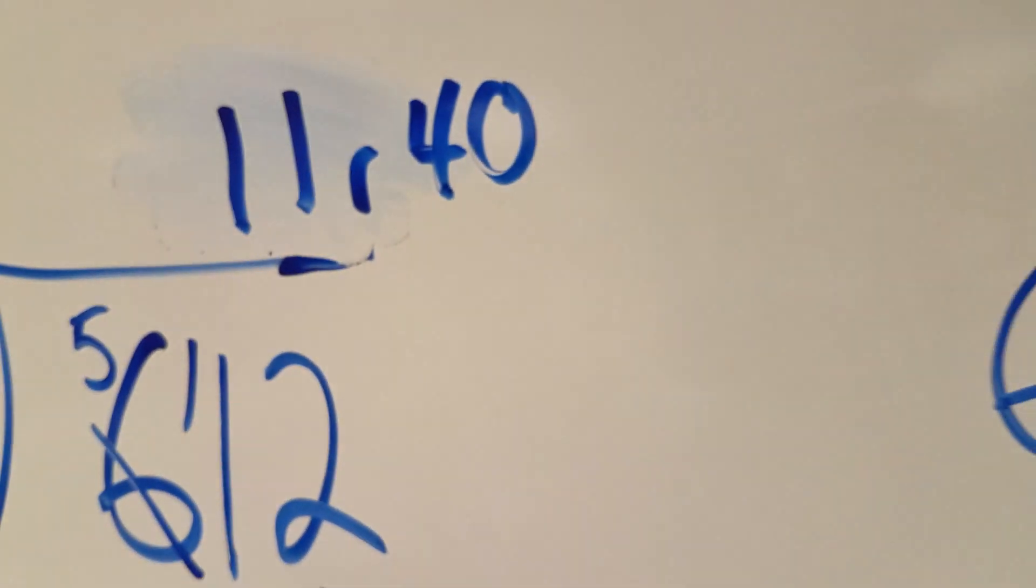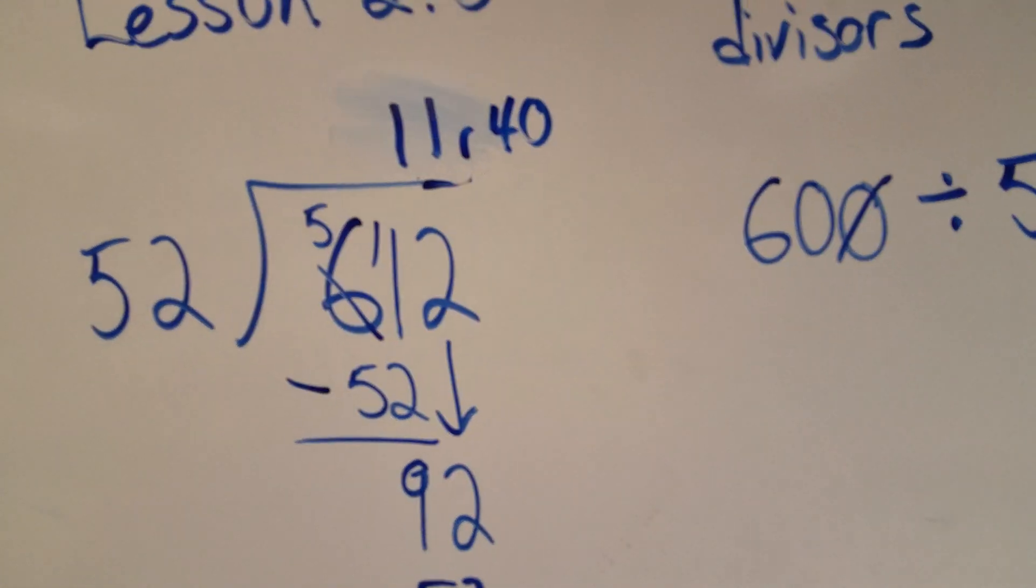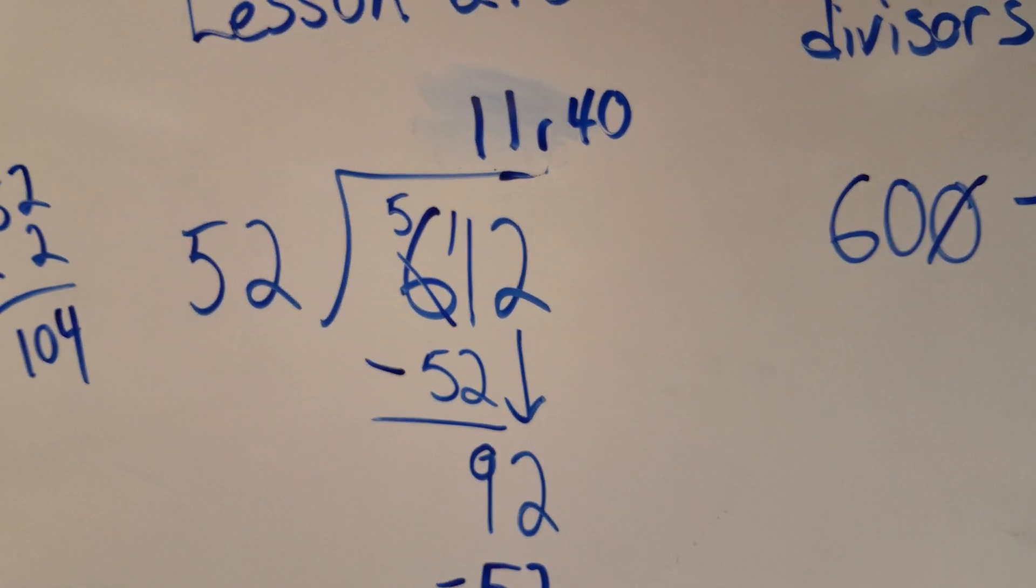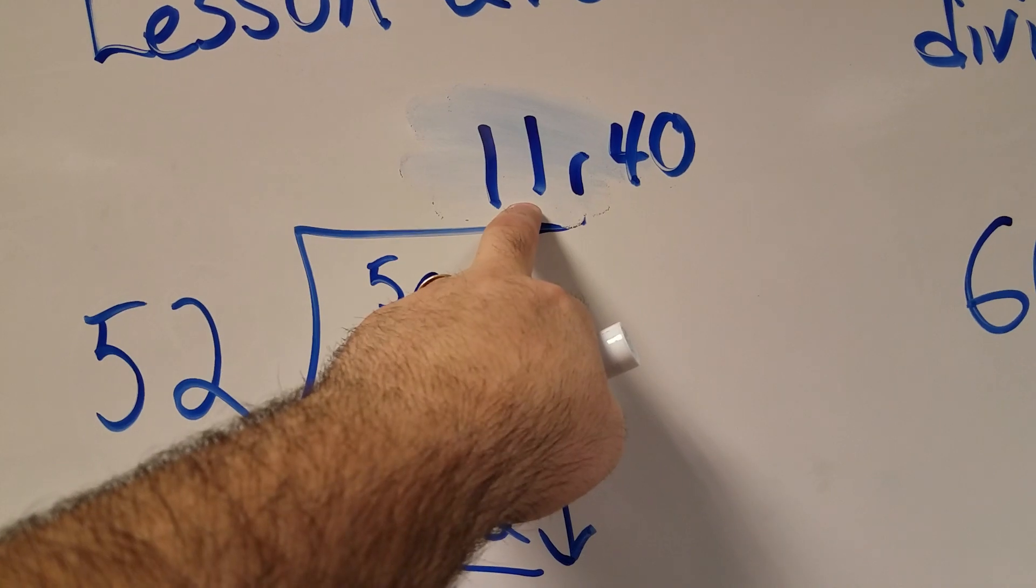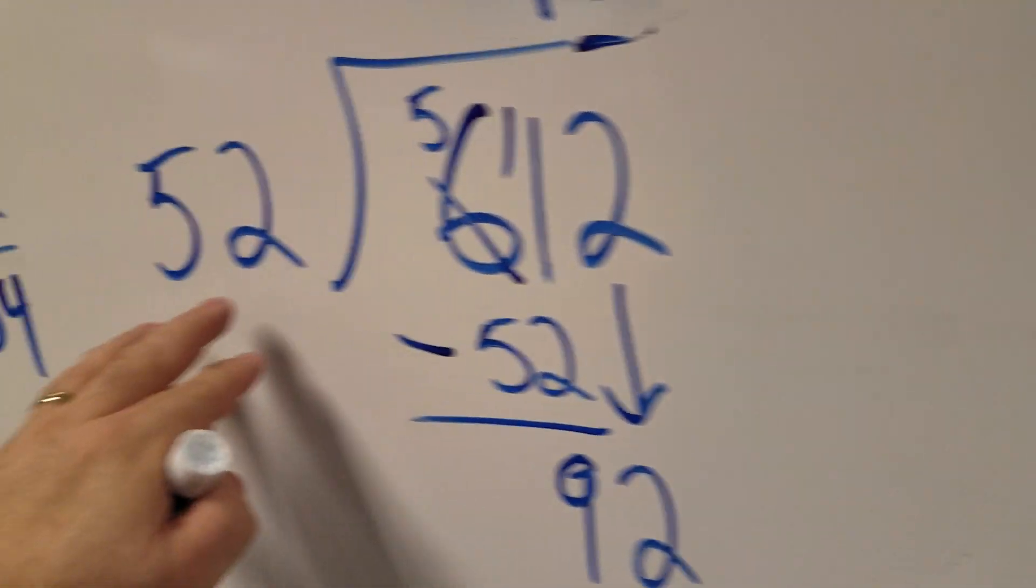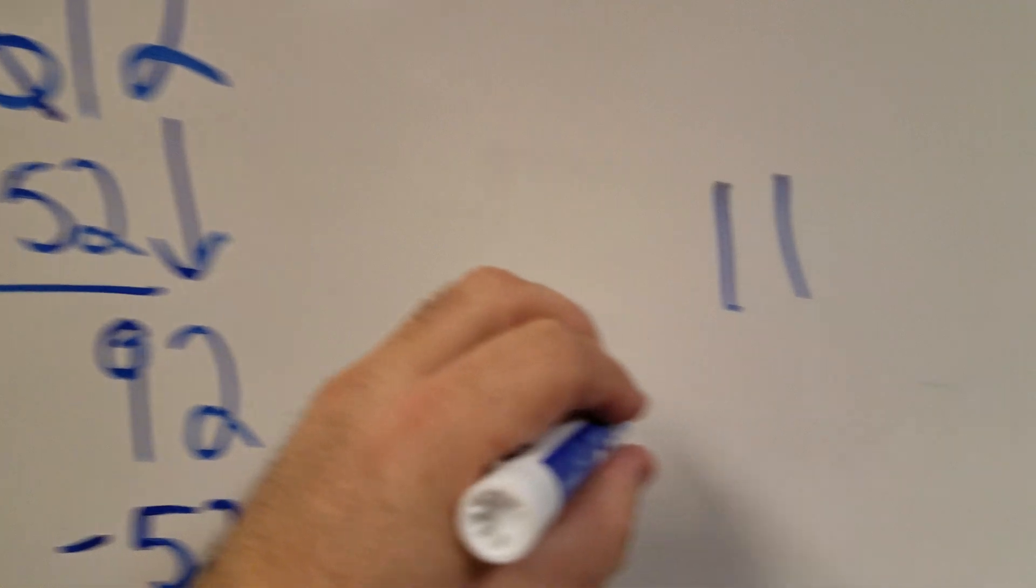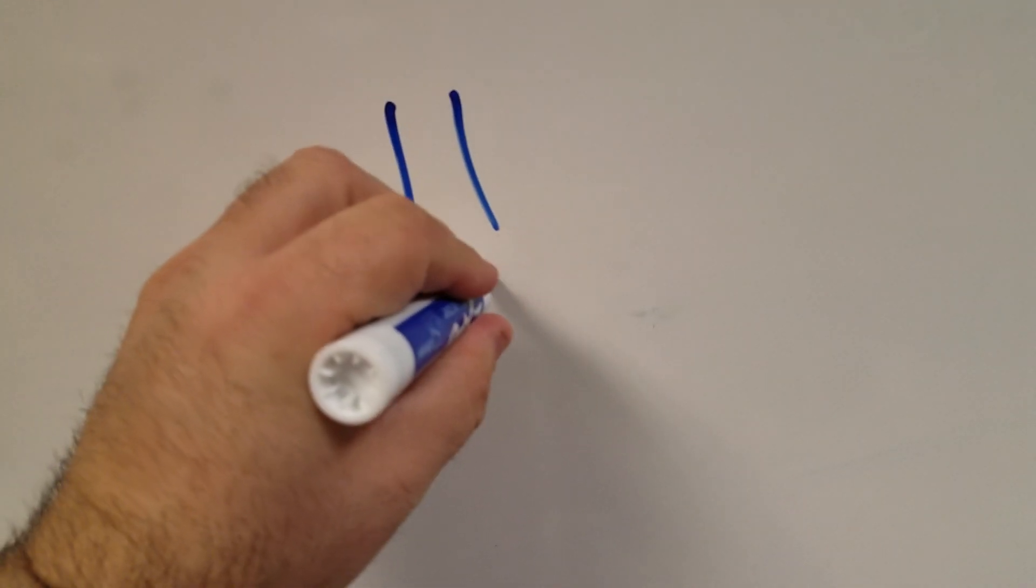Now I want to check to make sure that's the actual answer. What we do is take our quotient, our answer of 11, and multiply it by our divisor. So I'm going to take 11 times 52.